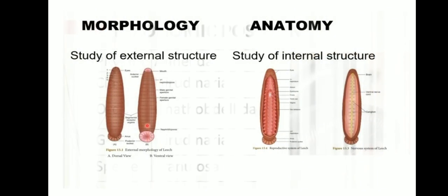You will understand the morphology as well as anatomy of two organisms: leech and rabbit. Morphology is the study of external structure — the outer structure which can be seen. Anatomy means internal structure; if you cut open an organism, the study of whatever organs are present inside is called anatomy. So morphology is external and anatomy is internal — that is what we are going to see for leech and rabbit in this lesson.